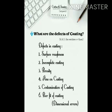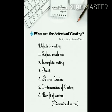Defects in casting: 1. Surface roughness. 2. Incomplete casting. 3. Porosity — A. Occluded gases. B. Cooling shrinkage. C. Flux, dirt or investment particles embedded in the metal. D. Back pressure effects. 4. Fins on casting. 5. Contamination of casting. 6. Poor fit of casting — A. Too large casting. B. Too small casting. C. Distorted casting.